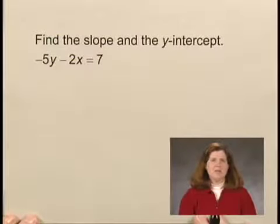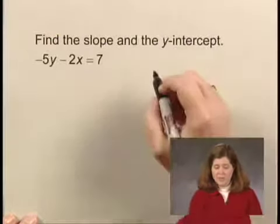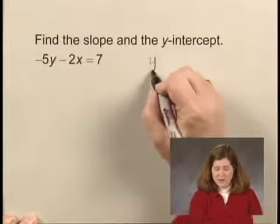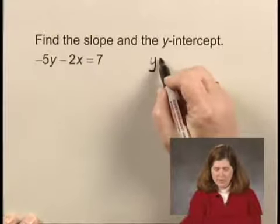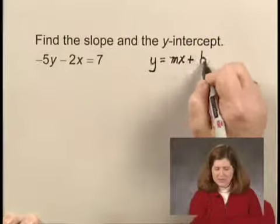Now, we can read the slope and the y-intercept of a line directly from the equation if the equation is in the form y = mx + b.